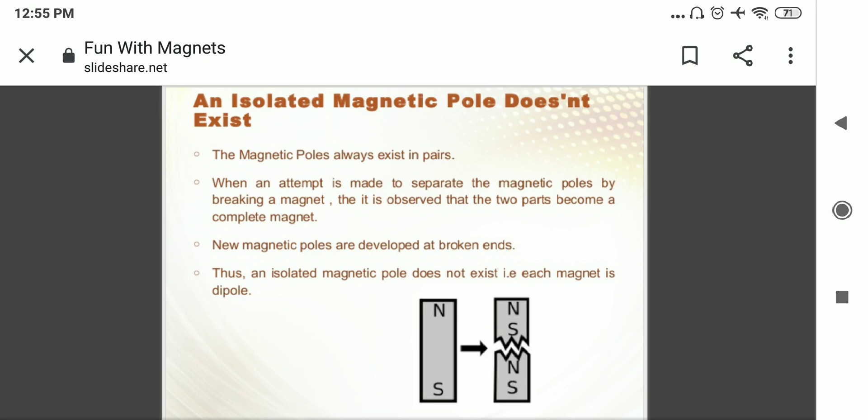So before starting the next part, let's recap what we have discussed already. In the beginning we did the discovery of the magnet, how magnet was discovered by a short story. After that we had seen that magnet has two poles, north and south pole.